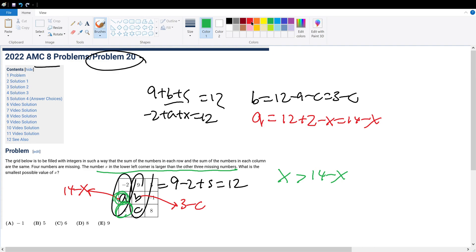So what number satisfies this formula? If we have X equals 7, that means 7 is greater than 7, which is false. So if we have X equals 8, we have 8 is greater than 14 minus 8, which is 6. So that is a true statement.